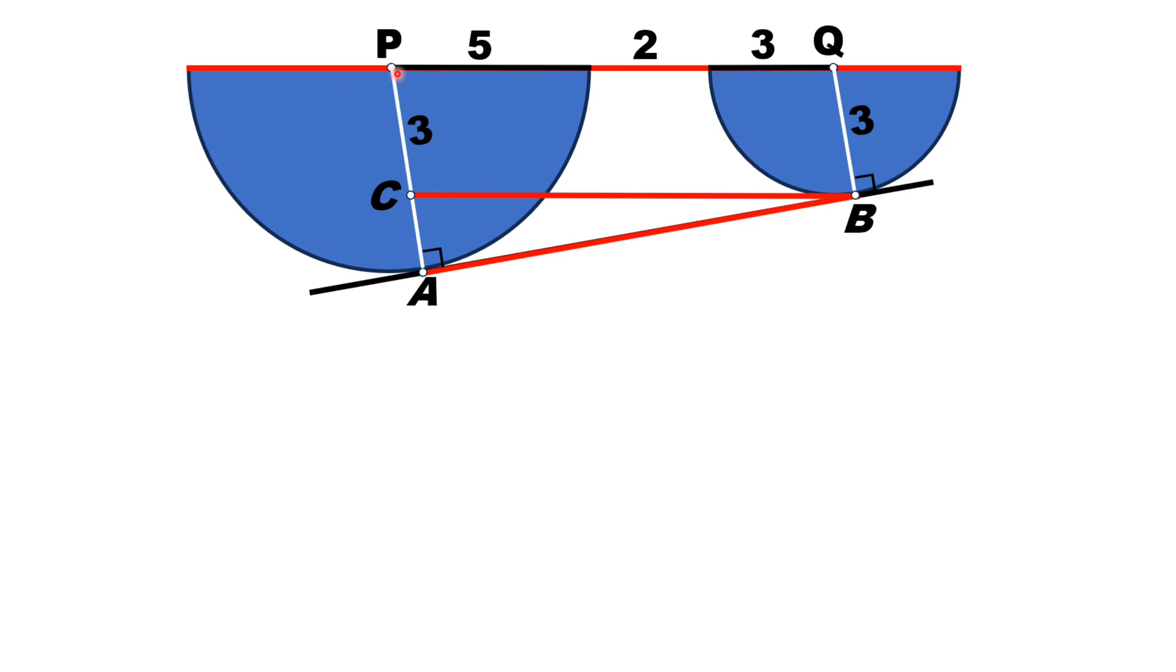Since PA is the radius of larger semicircle, its total length is 5. PC is 3 units, so CA length is equal to 2 units. If we compare line BC and PQ because of the symmetry, these two lines have same length, that is equal to 5 plus 2 plus 3, which is 10 units.